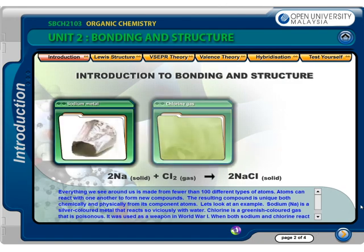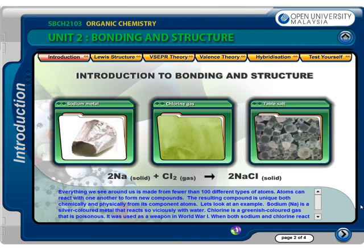Everything we see around us is made from fewer than 100 different types of atoms. Atoms can react with one another to form new compounds. The resulting compound is unique, both chemically and physically, from its component atoms. For example, sodium is a silver-colored metal that reacts violently with water. Chlorine is a greenish-colored gas that is poisonous — it was used as a weapon in World War I. When both sodium and chlorine react chemically, the compound sodium chloride, common table salt, is formed.